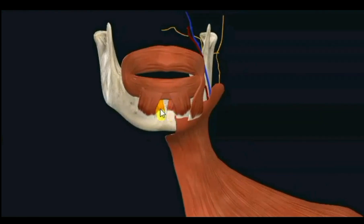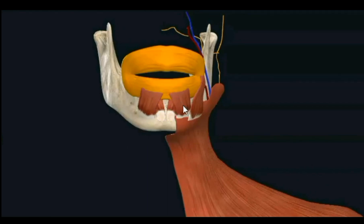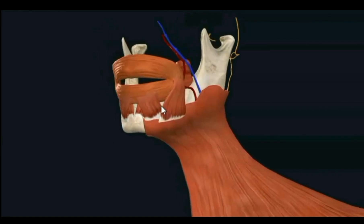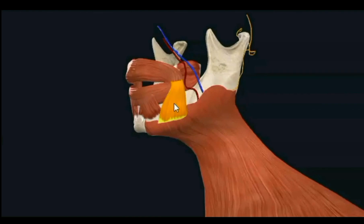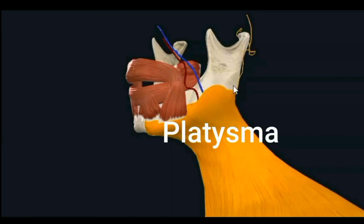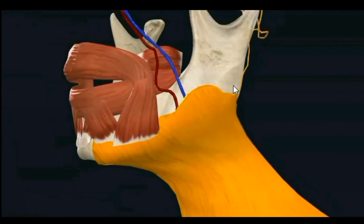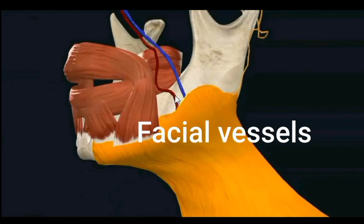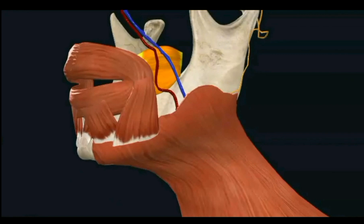The mentalis muscle originates from the incisive fossa on either side of the mental protuberance. Orbicularis oris is attached near the superior border just above the mental protuberance. Depressor labii inferioris is in the anterior part of the first half of the oblique line; depressor anguli oris in the posterior part. Platysma attaches just below the oblique line. The facial artery enters the face just in front of the anteroinferior angle of the masseter. In the posterior part of the oblique line, the buccinator muscle attaches.